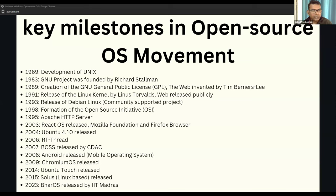Another important event in 1989 was the invention of the web. British scientist Tim Berners-Lee, working at CERN, invented the web, which was released publicly in 1994. This fueled the entire open source movement by opening efficient communication and collaboration among the community. In 1991, Linus Torvalds released the Linux kernel, and Tim Berners-Lee publicly released the web. In 1993, Debian Linux was released. In 1998, the Open Source Initiative was formed. In 1995, the Apache HTTP server was released — although not an OS, it became one of the most widely used web servers, helping promote the web and the open source ecosystem.